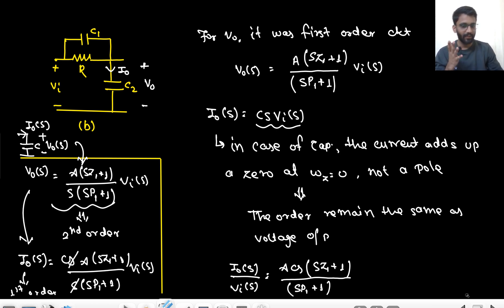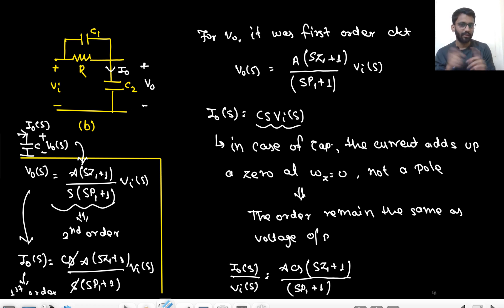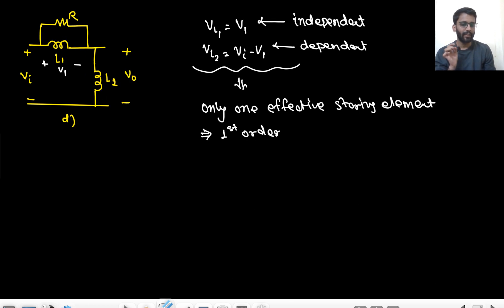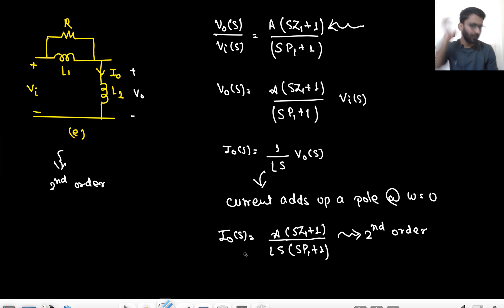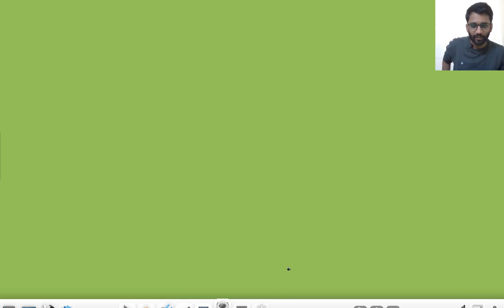To summarize the key check: for voltage output, check if there is a pole at ω = 0 (capacitor case — if so, current order reduces). For inductor, check if there is a zero at ω = 0 in voltage (if so, current order doesn't increase). You need to smartly check these conditions when converting between voltage and current output order.